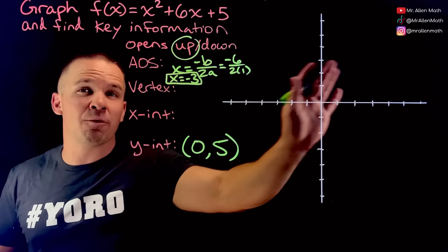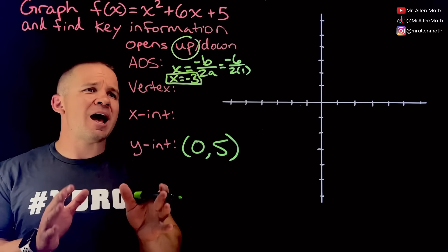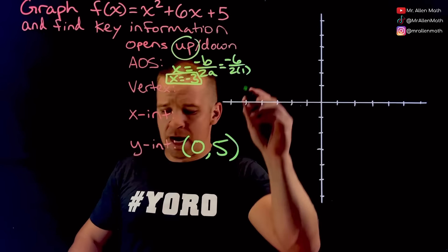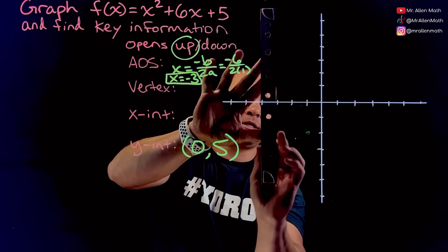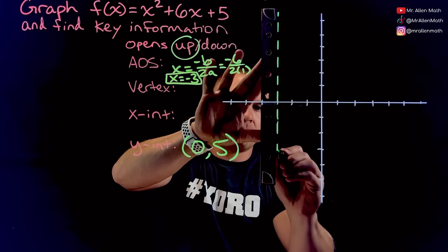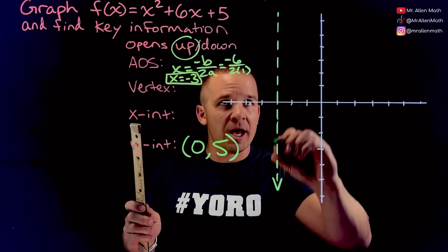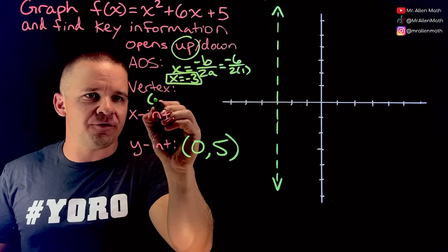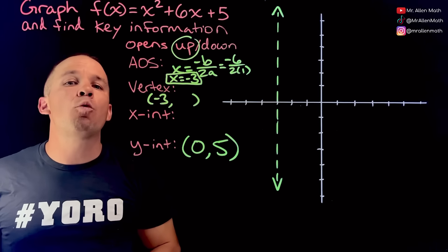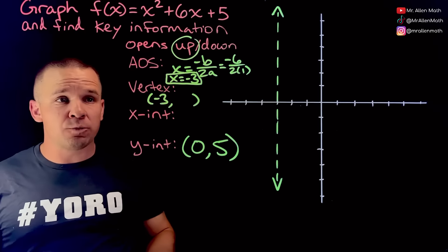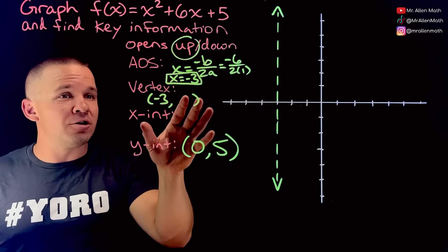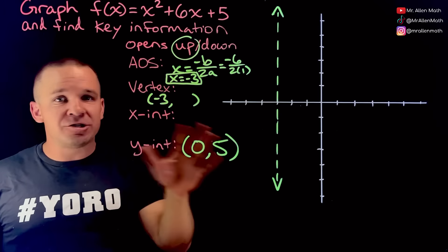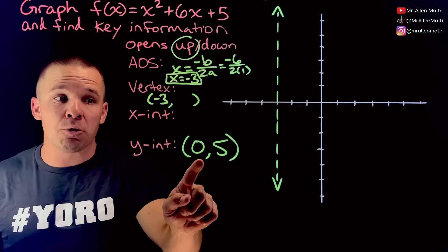The axis of symmetry, which I can plot right now, is x equals negative three. My vertex is going to be somewhere on that axis of symmetry. So I can use that x-coordinate, which is negative three, and plug it in to get my y-coordinate. If I have an x-coordinate that exists on that graph, I can plug it in and I will get the y-coordinate that goes with it — not just for my vertex, not just for my x-intercepts, but for anything.